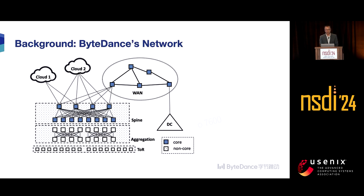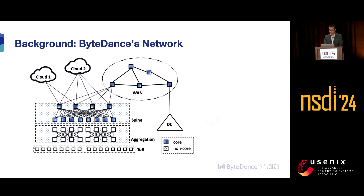A little bit of background on our network. Baidu's network consists of data center networks at different scales, including global ones and regional ones. We're also using third-party cloud services, which we call virtual data center networks, or VDCs. Our data center network follows the typical cluster structure with different layers of switches — namely ToR, aggregation, and spine — as shown in the figure. We call the high-level devices, including the spine- and the core-level devices, the core devices. The rest we call non-core devices.